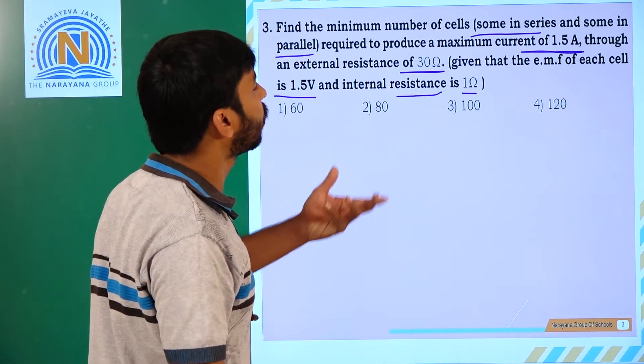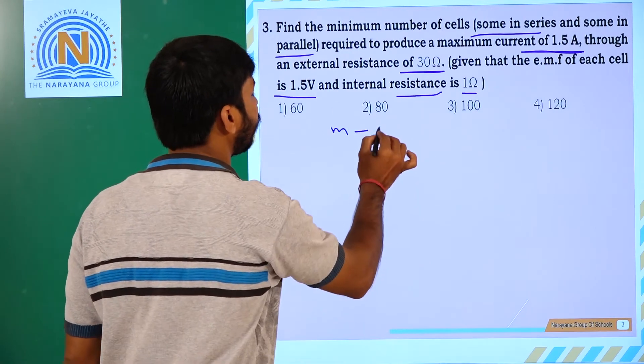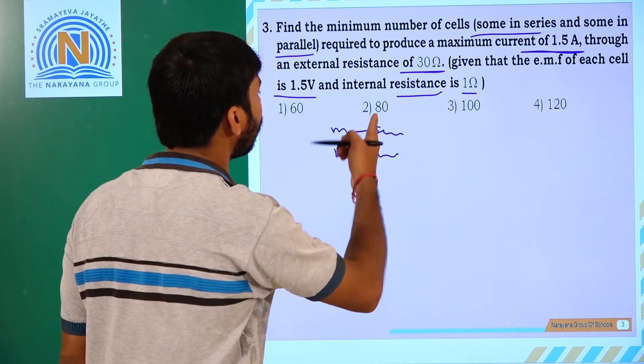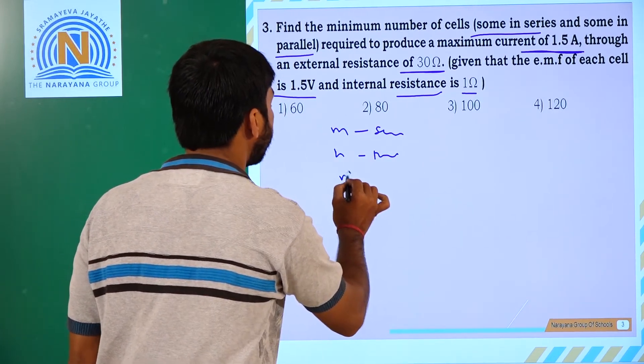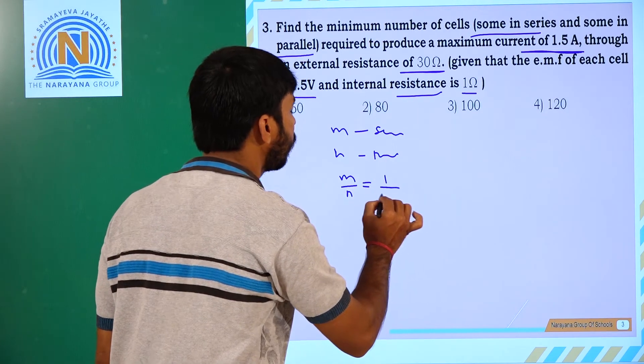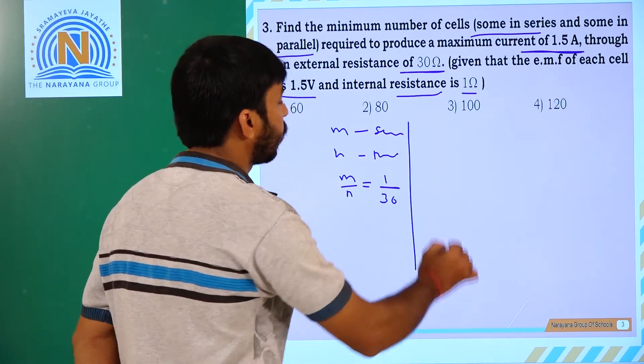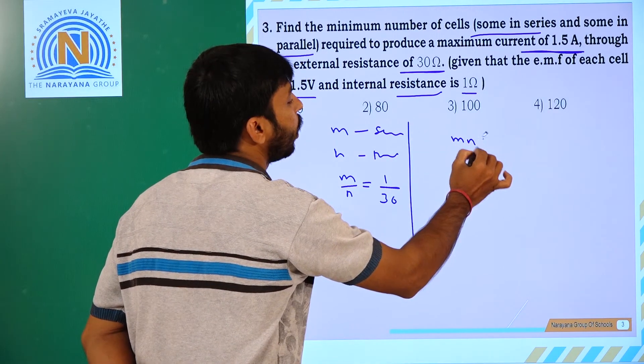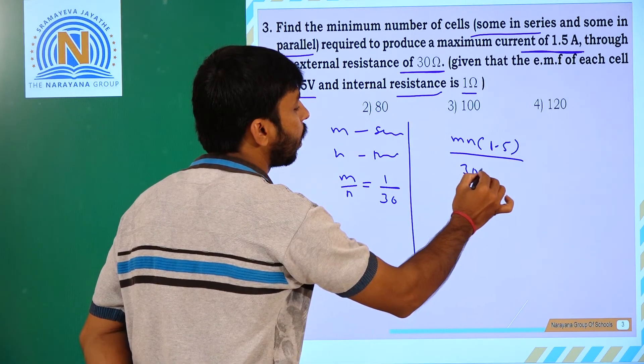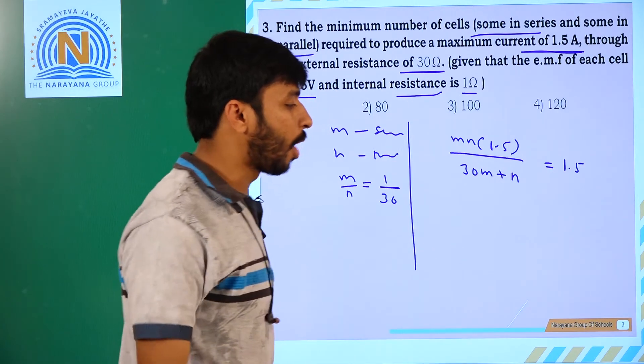EMF of each cell is equal to N resistors, some are in parallel. We have 30 ohms, so EMF of each cell is 3M times EMF of each cell. MN into 1.5 by 30M plus N is equal to 1.5.